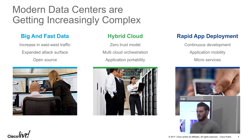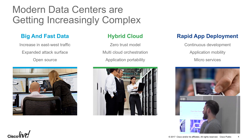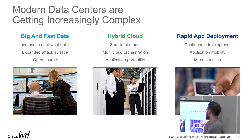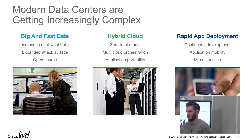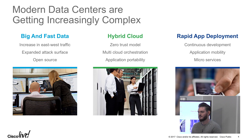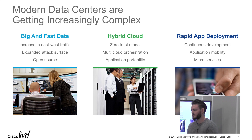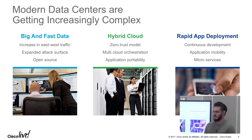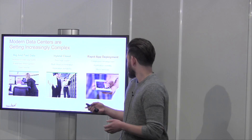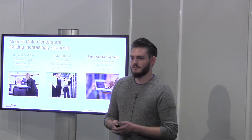Second, on-premise data centers are not the only location customers run workloads — they often have workloads in the cloud, whether AWS, Azure, or Google, and are moving workloads back and forth. They want one monitoring and policy framework that understands where a workload is placed and is agnostic to the infrastructure. Finally, the rise of DevOps means applications are deployed far more quickly, making the traditional approach of keeping network infrastructure in line with application requirements very brittle. Tetration helps customers understand their applications, build policy around them, and enforce that policy at the switches or host level.